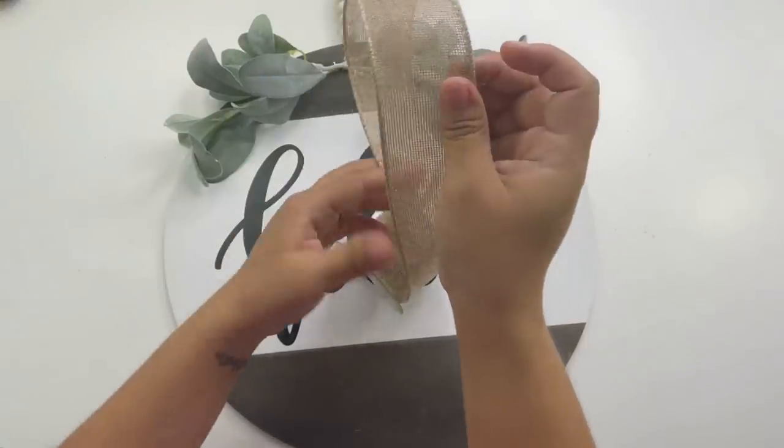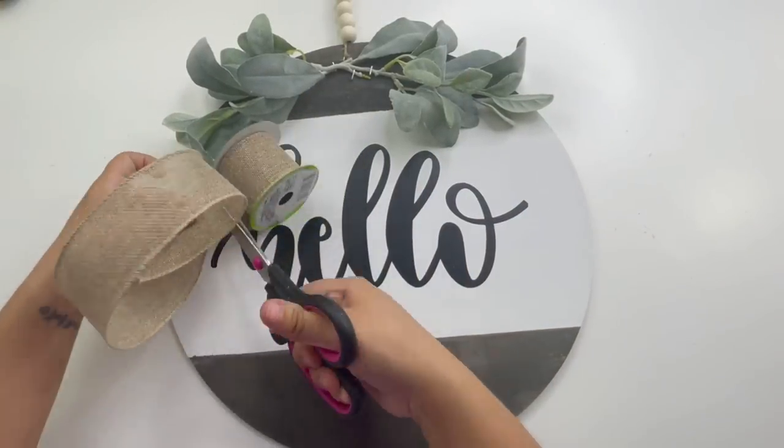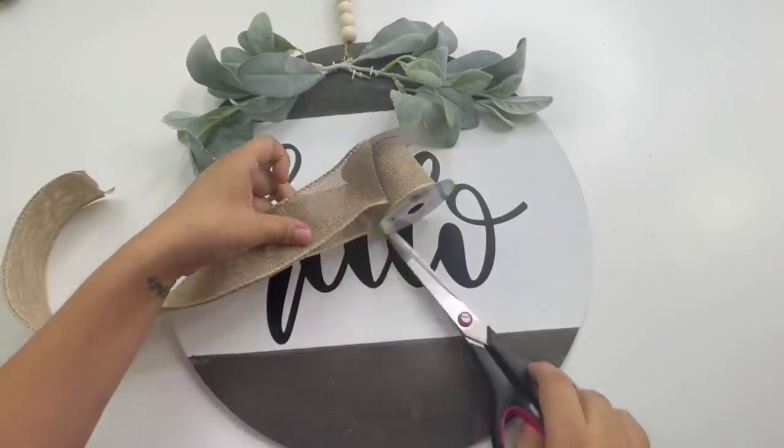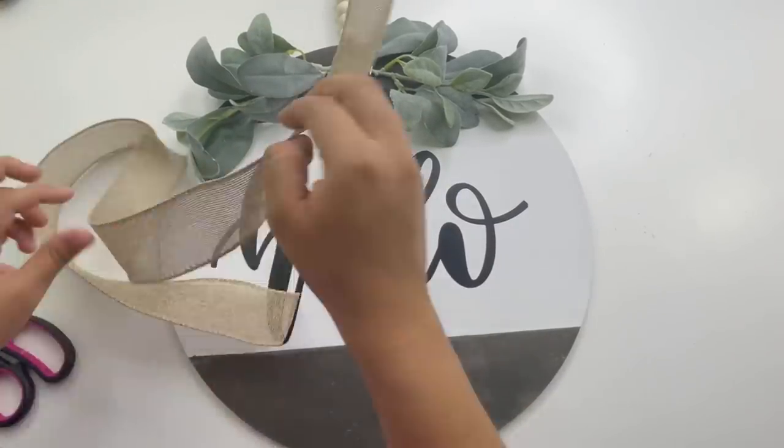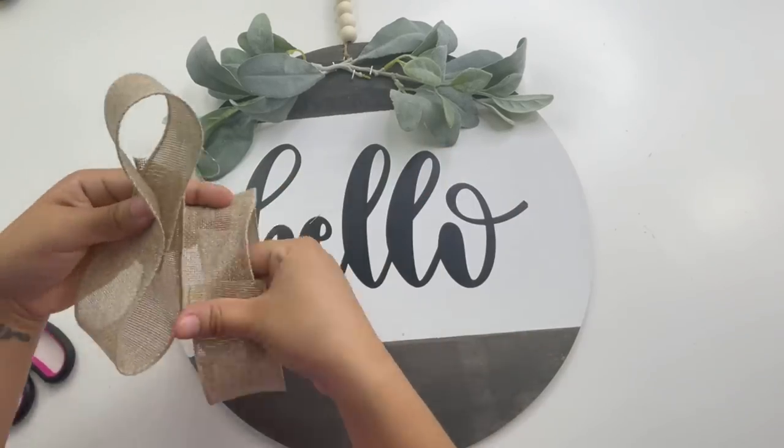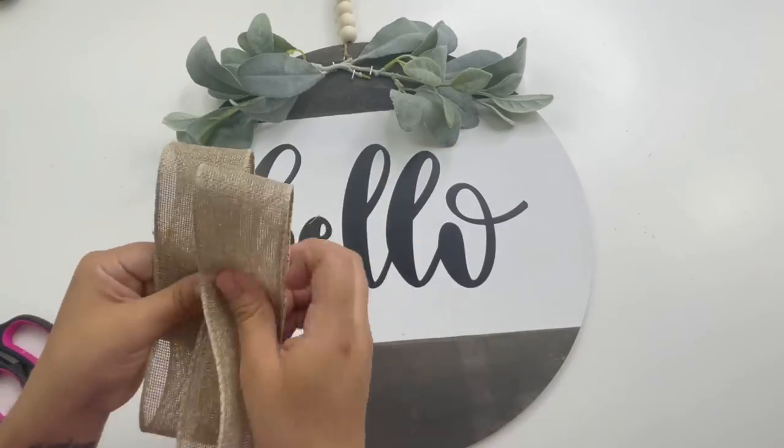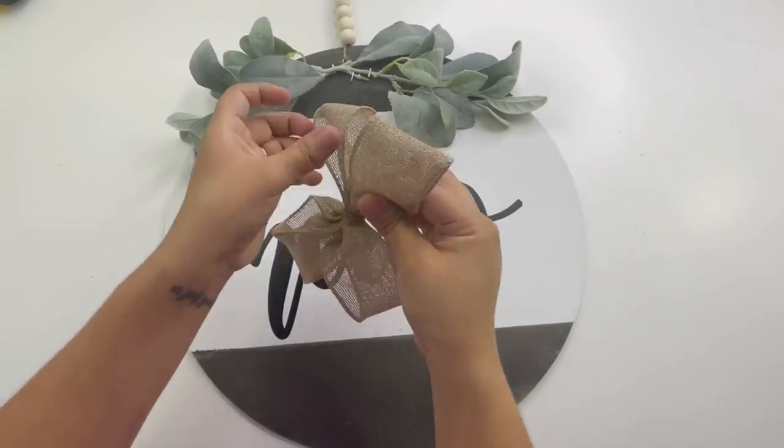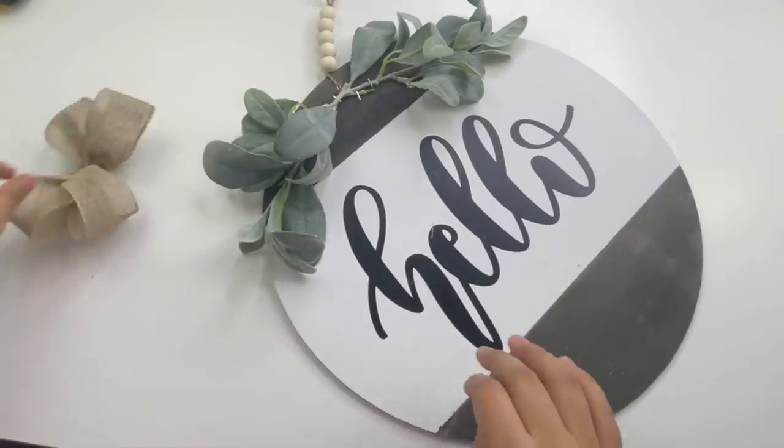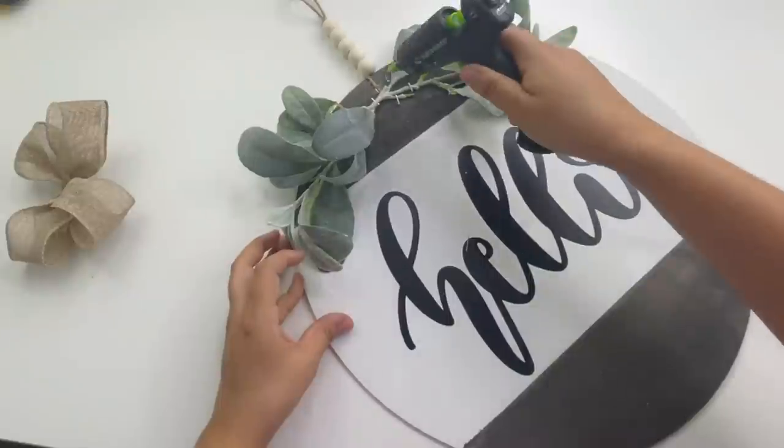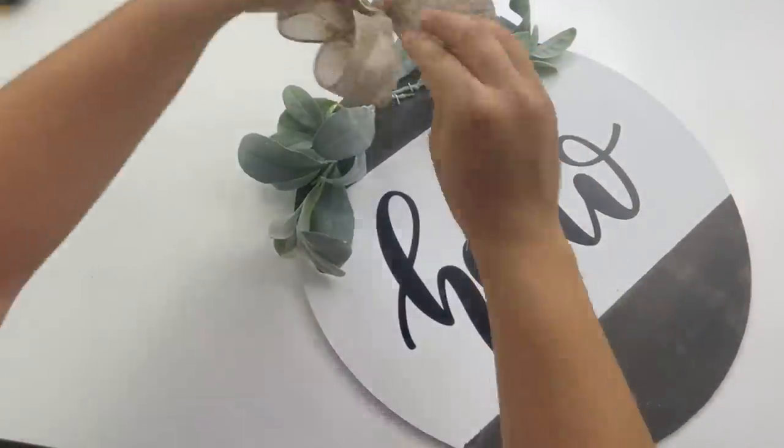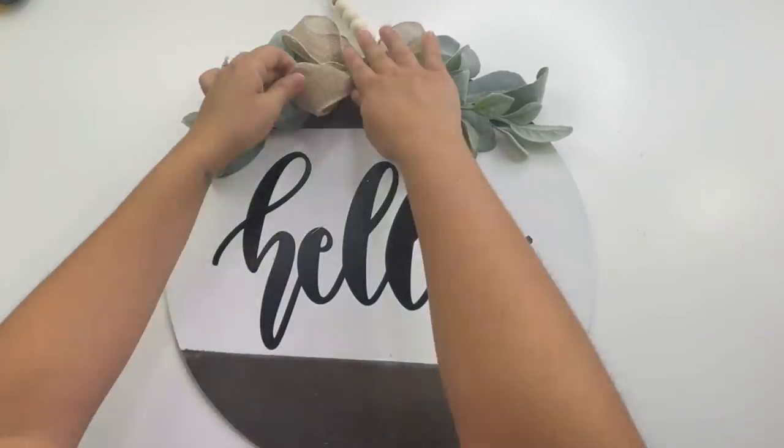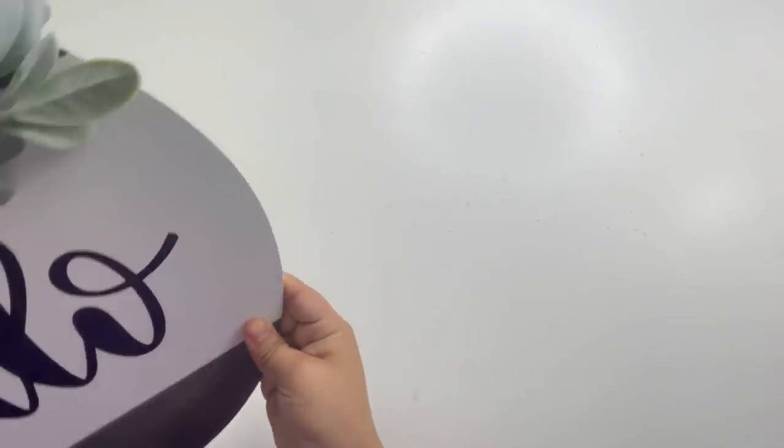Using the Dollar Tree burlap ribbon, I will be making a double bow without the tail. I'm going to glue the bow in the center and this is going to hide all the staples. And that is it for this beautiful hello hanging decor sign.